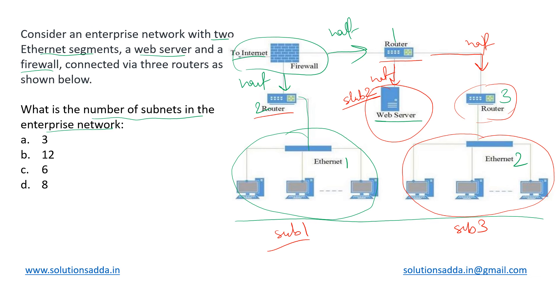So there are three routers and three subnets got created in this network as per the distribution of addresses logically. So the number of subnets in this enterprise network is 3 and that is our answer option A.